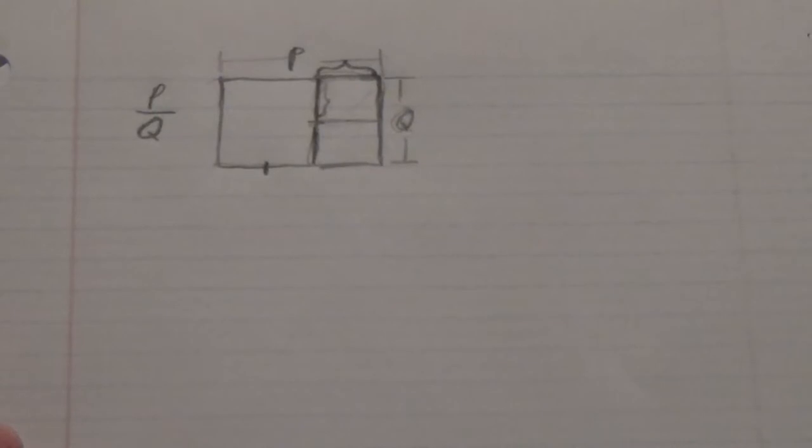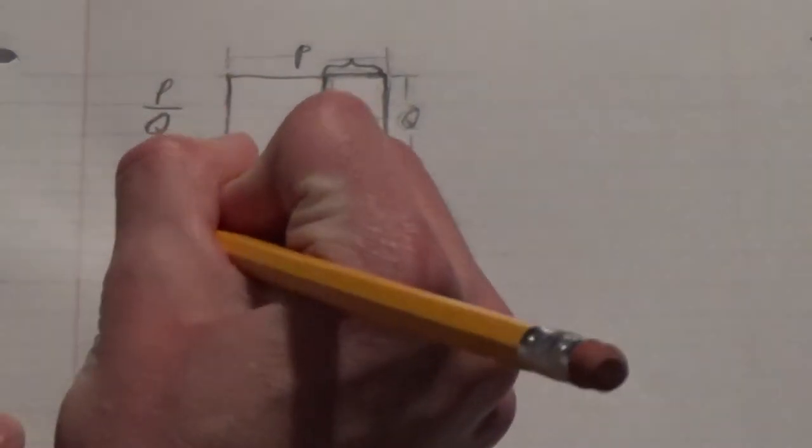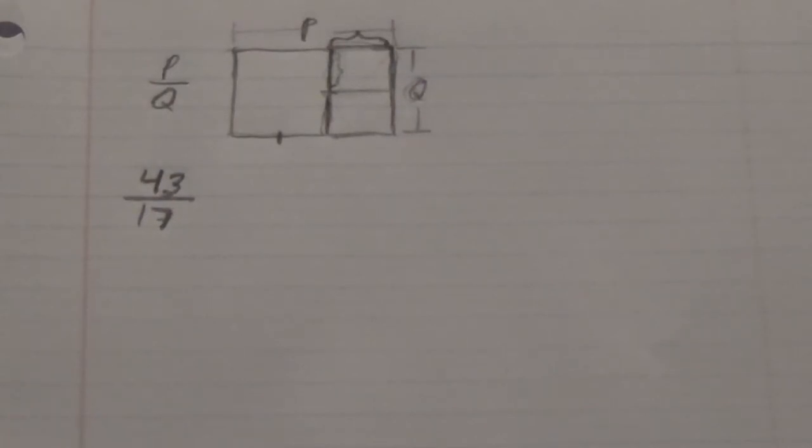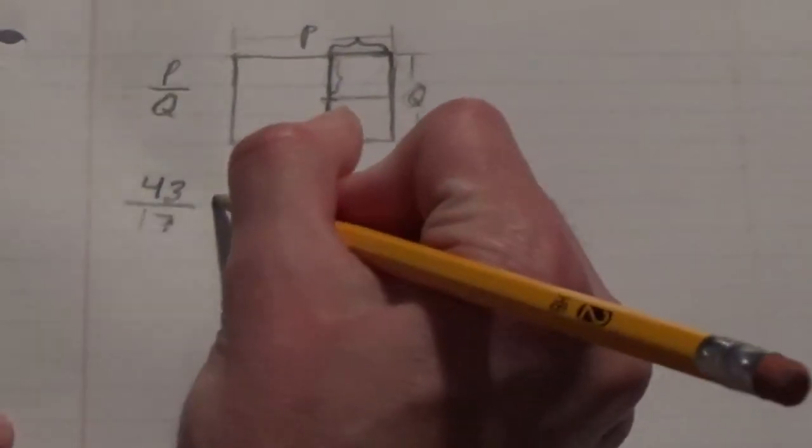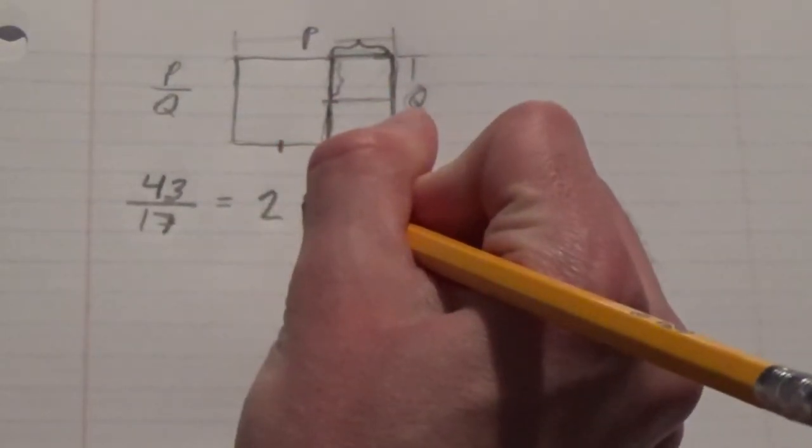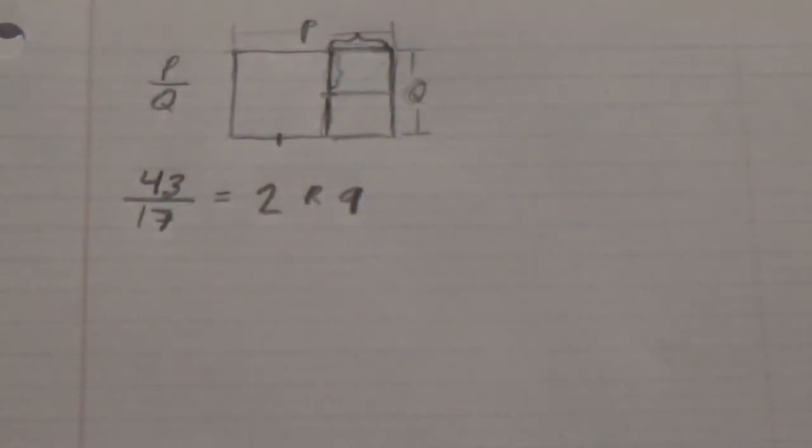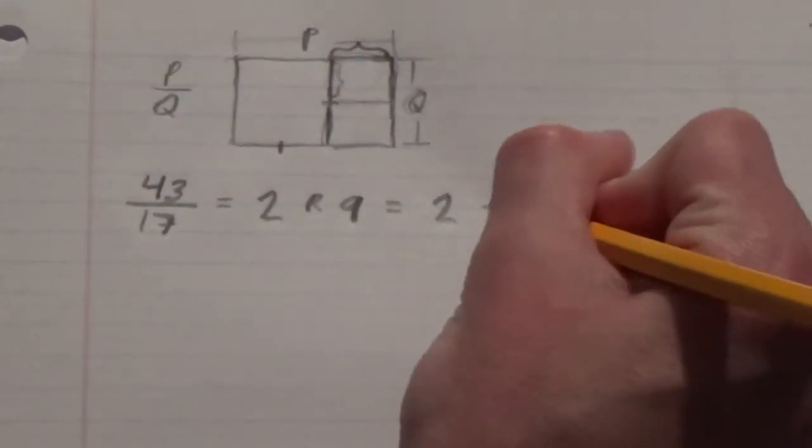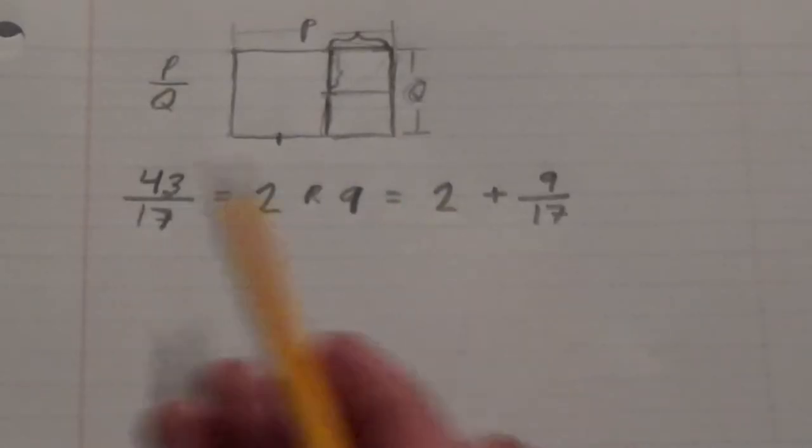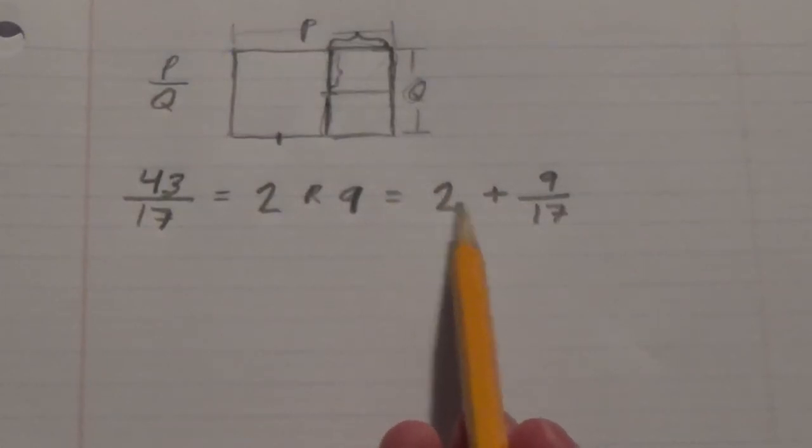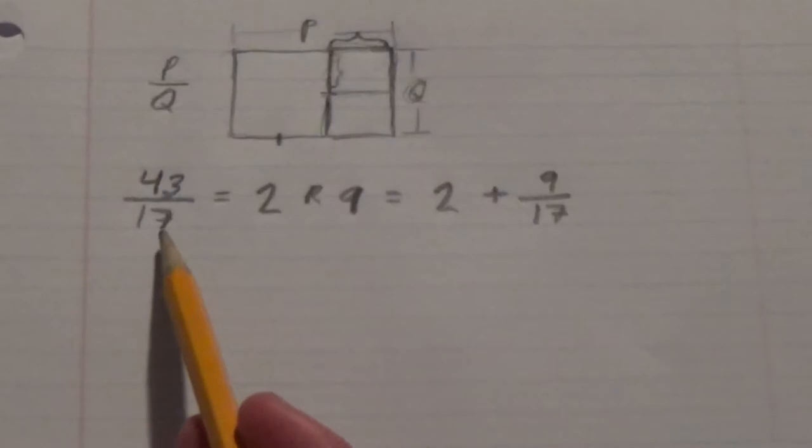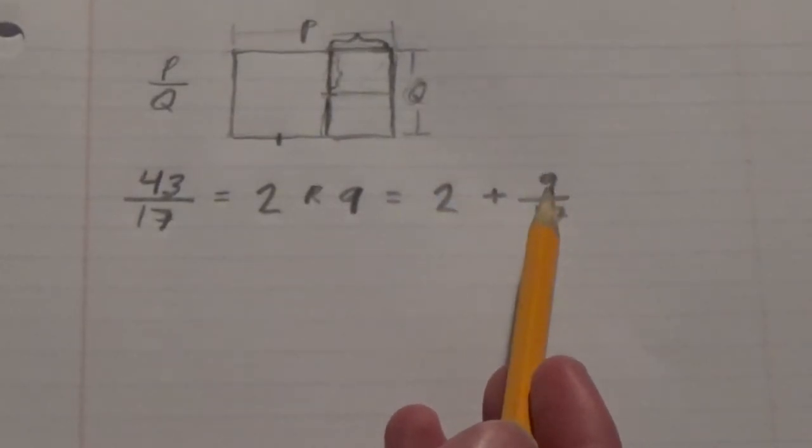We can take an example, 43 over 17. How we would go about this is a relatively basic task. Basically, 43 divided by 17 can be written as 2 with a remainder of 9. What we really mean by that is it is 2 plus 9 over 17. This is because 2 times 17 equals 34, and 34 plus another 9 equals 43.